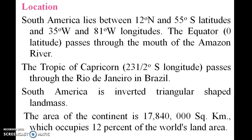The location spans 12 to 55 degrees latitude and 35 to 81 degrees longitude. The equator — zero latitude — passes through the mouth of the Amazon River. The Tropic of Capricorn passes through Rio de Janeiro in Brazil. South America is an inverted triangular shaped landmass, with an area of nearly 17 million square kilometers, occupying 12% of the world's land area.